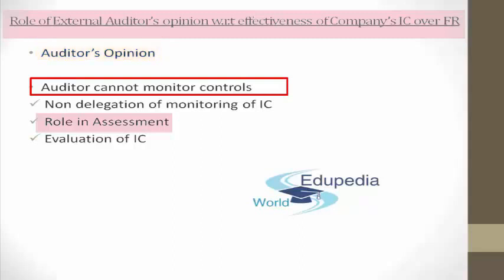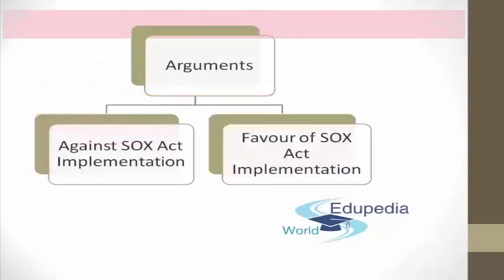Number three: role of assessment. Under Section 404 of SOX, the external auditor must attest to the effectiveness of management's evaluation of the internal controls. The external auditor must be involved in that assessment. And finally, number three: evaluation of IC. Management must be actively involved in the evaluation of IC and coordinate the process with external auditors. So that is about the role of the external auditor — providing the auditor's opinion, not monitoring controls, being involved in assessment and evaluation of IC.